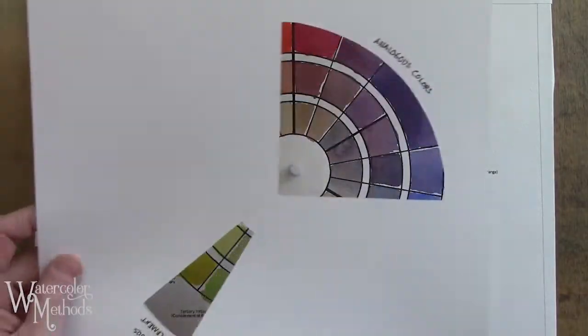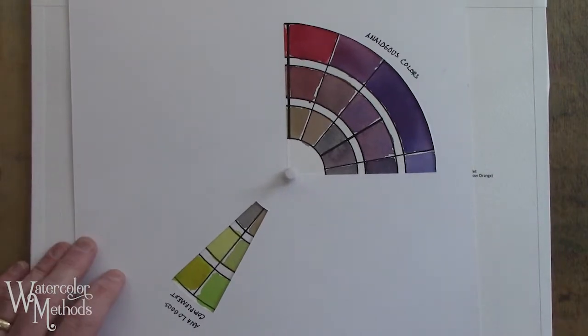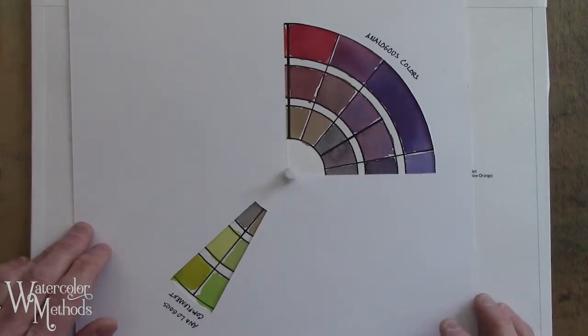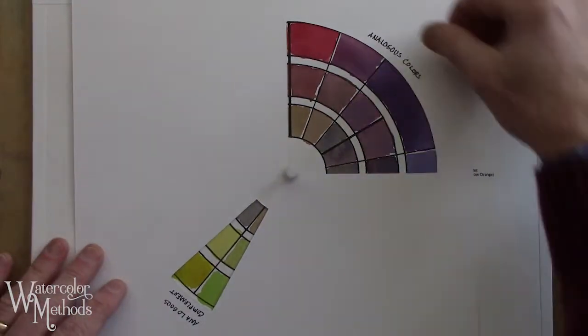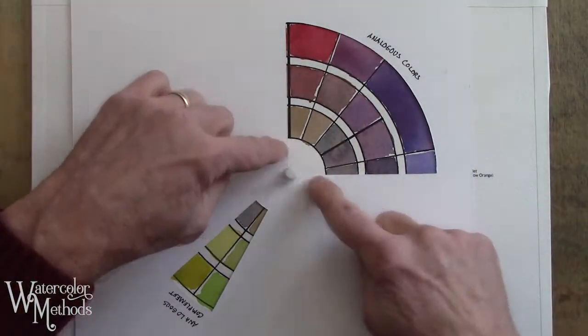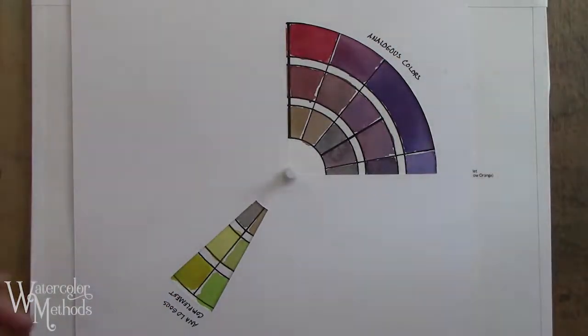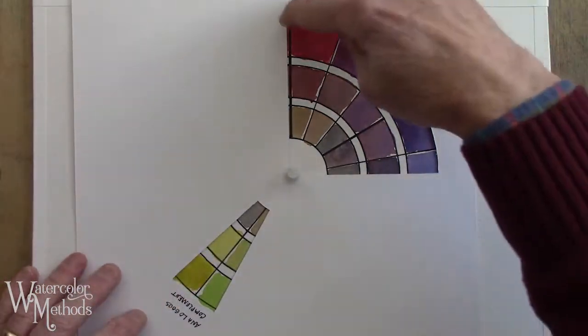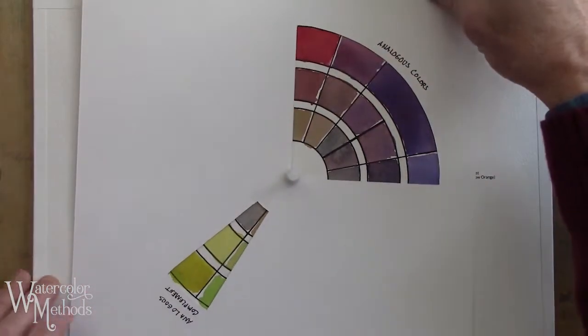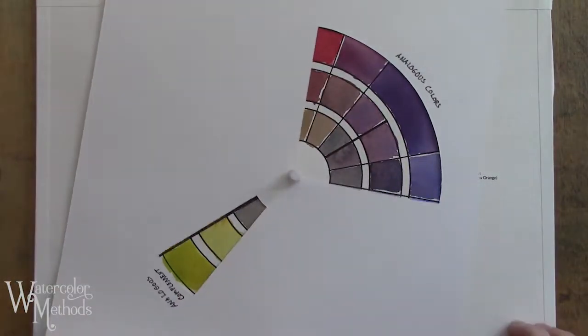I've actually created a little template that goes right along with this particular color wheel, and that's what I'm going to use. It's 90 degrees, just like my piece of mat board, and it isolates for me groups of colors that are near each other, grouped together on my color wheel.